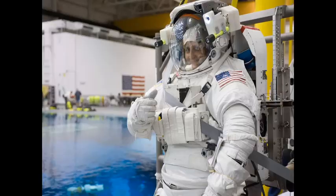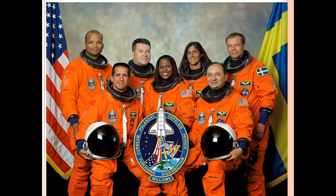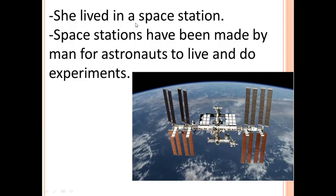Sunita Williams was part of a crew — she did not go alone. She lived in a space station. A space station is a structure made by scientists where astronauts can live in space and do their experiments, just as we live in our houses.